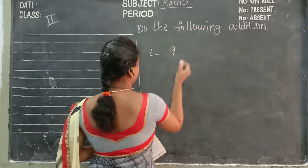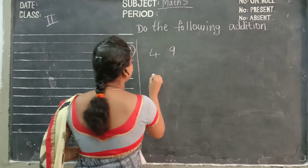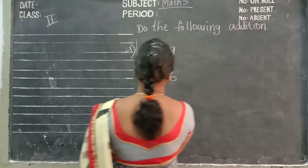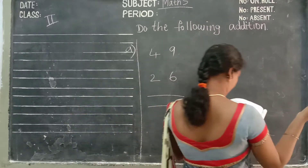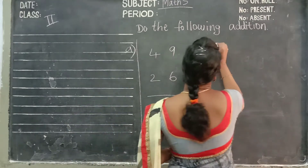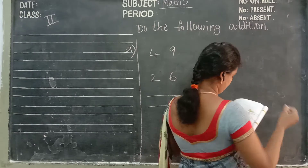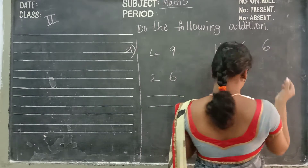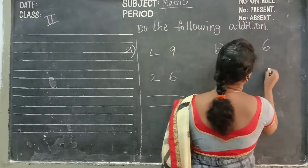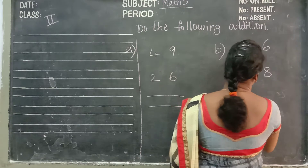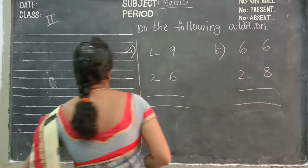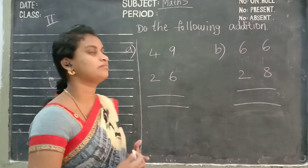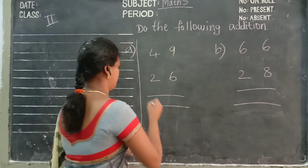A: 4, 9 and 2, 6. B: 6, 6 and 2, 8. Addition symbol — what is the addition symbol? Plus.